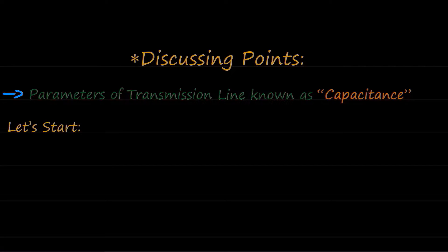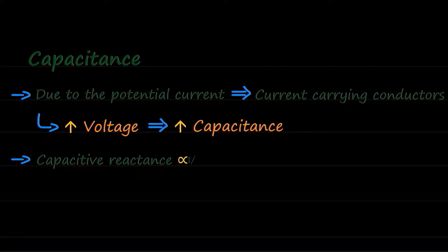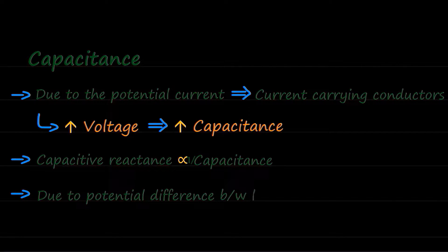Let's start by discussing capacitance and its effect on the power system. Capacitance is basically due to the potential difference between current carrying conductors. The higher the voltage, higher is the capacitance. Capacitive reactance is inversely proportional to capacitance. Due to potential difference between live wires, they act as plates of a capacitor.